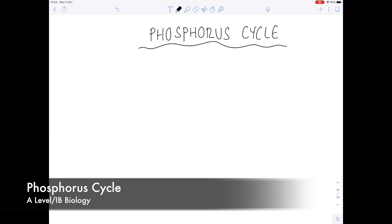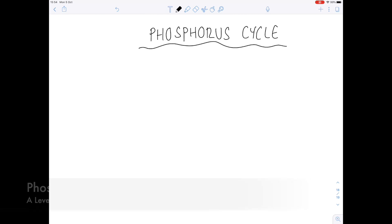This A-level IB biology video is all about the phosphorus cycle. Like the nitrate cycle and the carbon cycle, the phosphorus cycle is all about how different forms of phosphorus are transitioned within the environment.